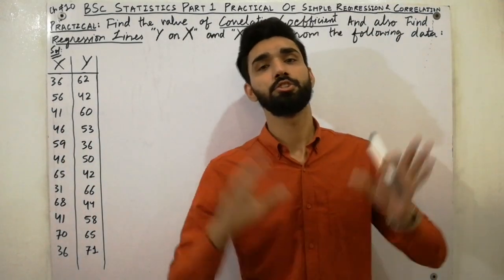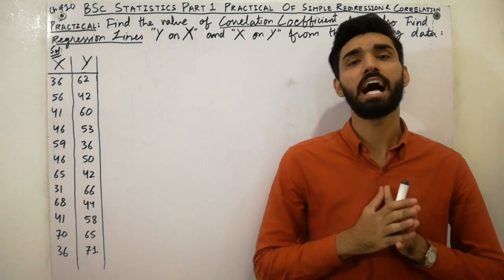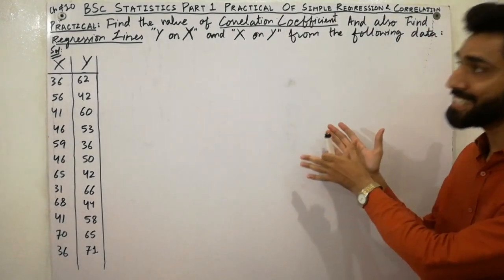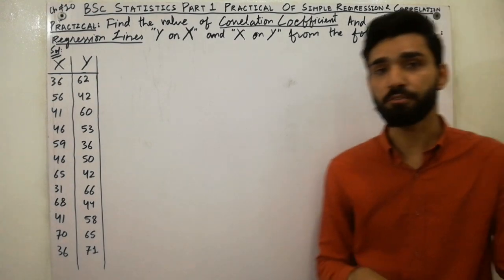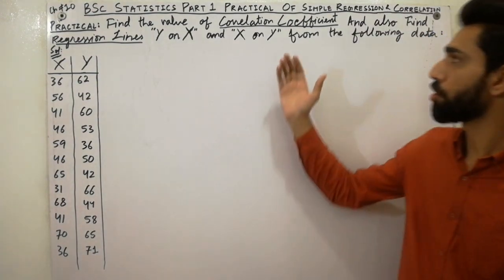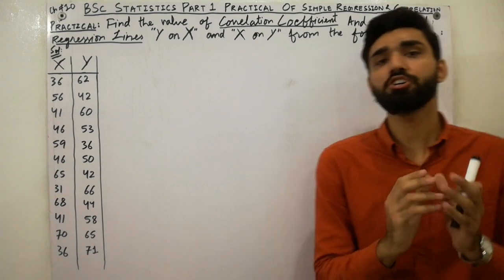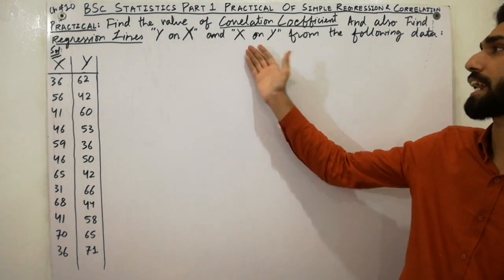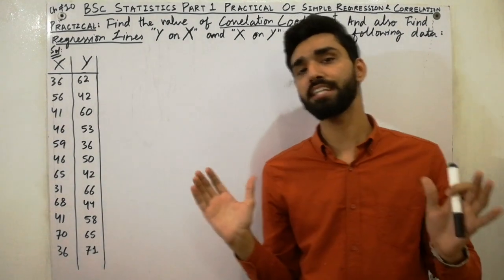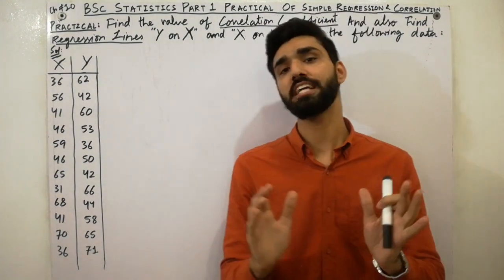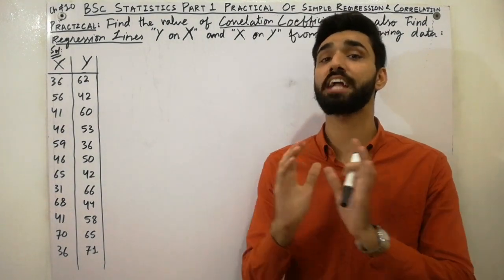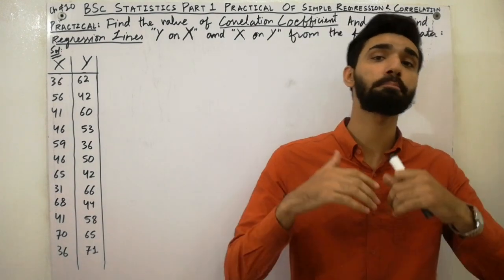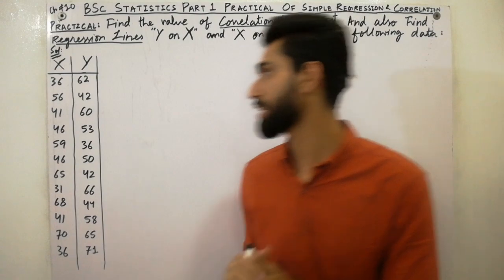Salam alaikum dear friends. Today I am here to explain a practical on how to solve a statistics problem in which we will find the correlation coefficient, noted by small r, and regression lines y on x and x on y. This video is very interesting, so don't skip any part, as each step of this lecture is very important. Let's start.